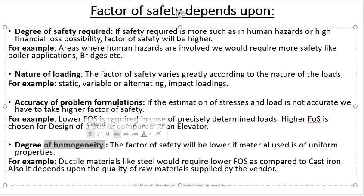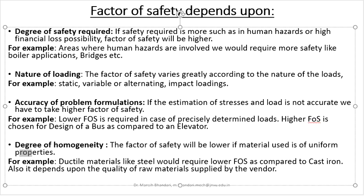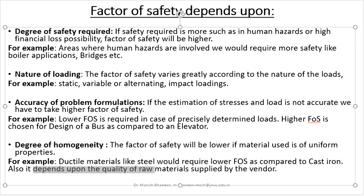The next point is the degree of homogeneity. The factor of safety will be lower if the material used has uniform properties, because you know that at all points the material will behave in the same manner. For example, ductile materials like steel require a lower factor of safety as compared to cast iron, since steel is more homogeneous. It also depends upon the quality of the raw material supplied by the vendor — if the vendor is reliable, the properties of the raw material can be trusted, and the factor of safety required will be lesser.